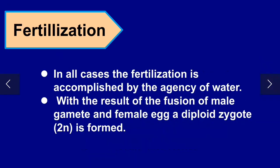Fertilization: when the male gametes, called antherozoids or sperms, move with the help of water towards the egg, both the egg and sperm fuse with each other and form a structure called the zygote. This process is called fertilization.